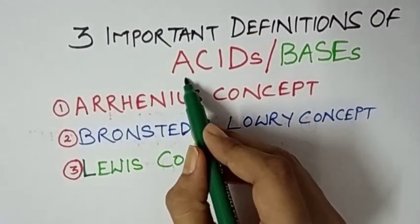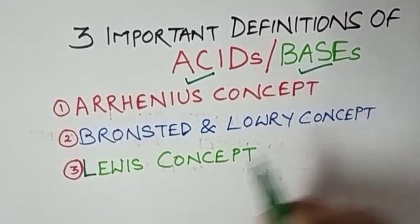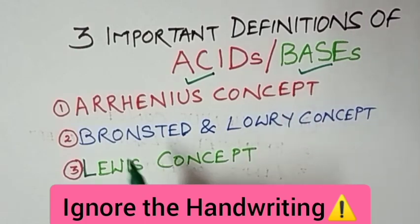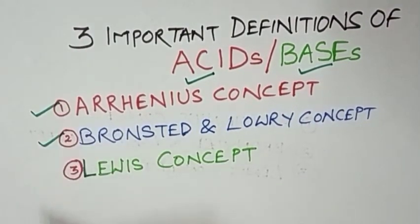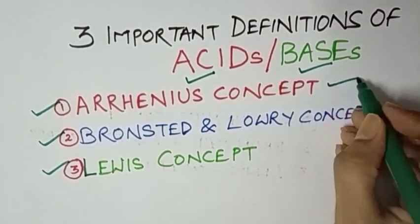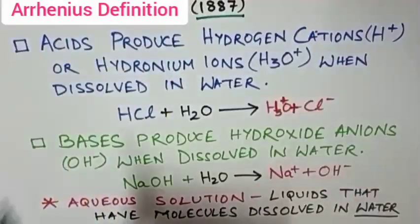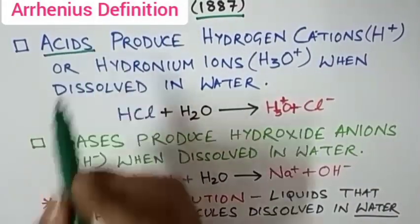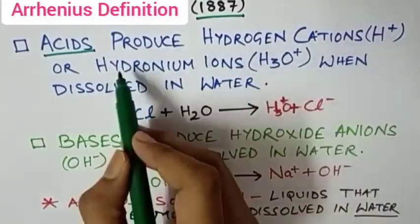The most important thing about acids and bases are their definitions. They are important because there are three important definitions for acids and bases: one is Arrhenius concept, next is Bronsted and Lowry concept, third is Lewis concept.